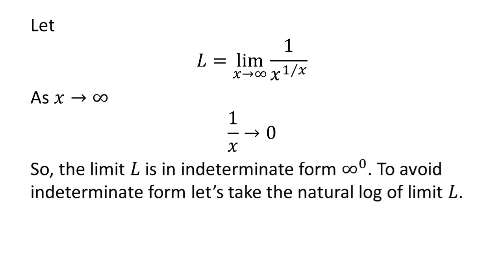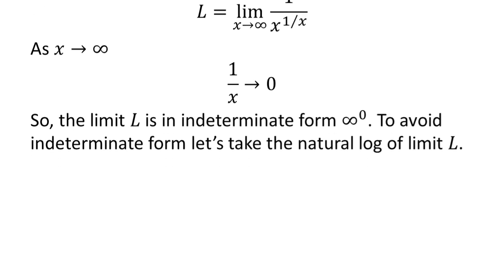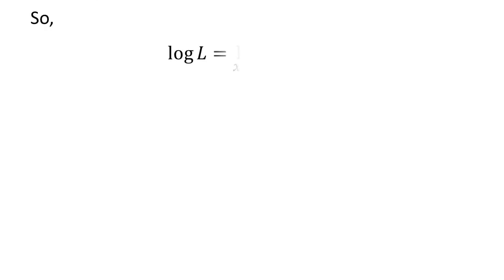As x approaches infinity, 1 upon x approaches 0, so the limit L is in indeterminate form. To avoid this indeterminate form, let us take log of both sides. So, log of L is equal to the limit of log of 1 upon x raised to the power of 1 upon x as x approaches infinity.